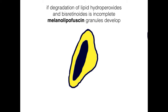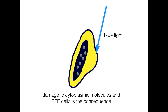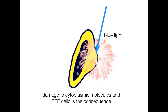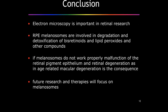If degradation of lipid hydroperoxides and bisretinoids is incomplete, melanolipofuscin granules develop. During aging or in Stargardt disease, melanosomes become exhausted and lose the ability to absorb radicals. In these melanolipofuscin granules, blue light induces radical formation from lipofuscin and damages the cytoplasmic molecules in RPE cells, and death of RPE cells is the consequence.